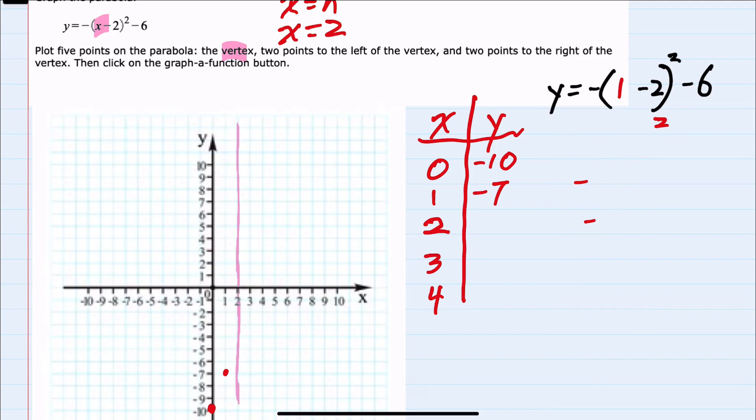Next we'll plug in two. This time two minus two is zero squared. Zero squared is zero. Even with the minus outside we still have zero. So this gives us a minus six. We have our vertex here at two, minus six.